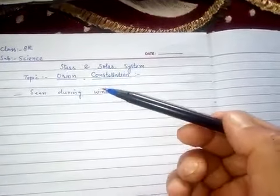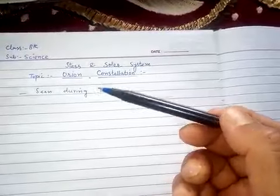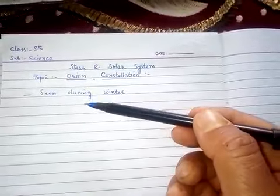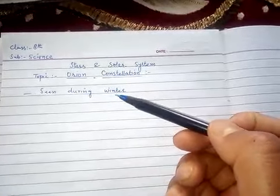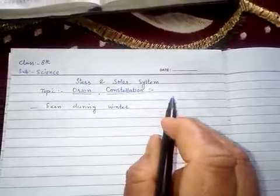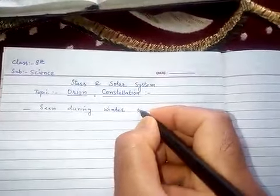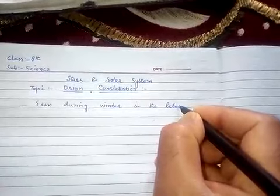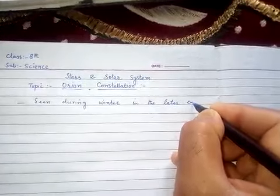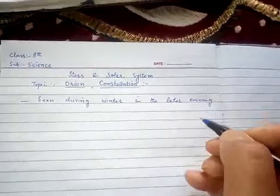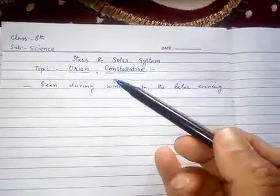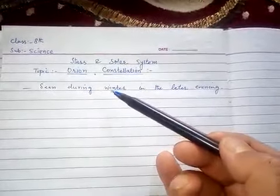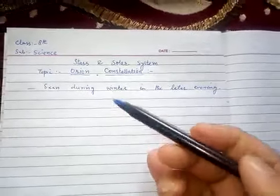The Orion constellation can be seen during winter, in the late evening. Not in the early evening, but in the late evening. You can get a clear view of the Orion constellation during winter months in the late evening.